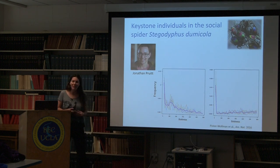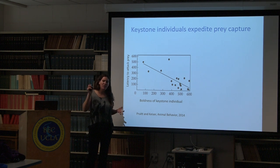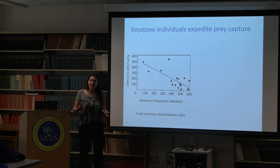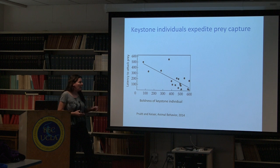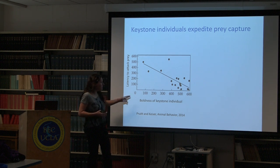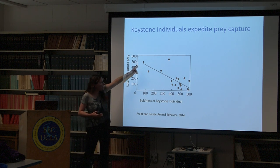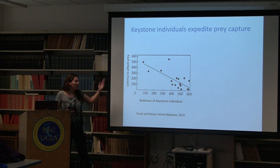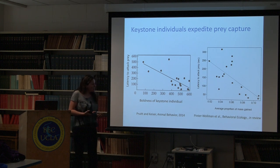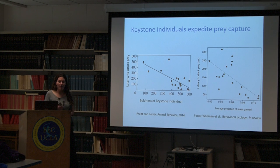We call extremely bold individuals 'keystone individuals' because of how they influence collective behavior. If we take a group of shy individuals and place just one bold individual in the group, it will expedite their prey capture behavior. The boldness of the keystone individual influences how much they expedite prey capture - as the keystone individual is bolder, we get faster latencies to attack prey. This latency to attack prey is related to the proportion of mass gain, so you do want to capture prey faster because you gain more weight.